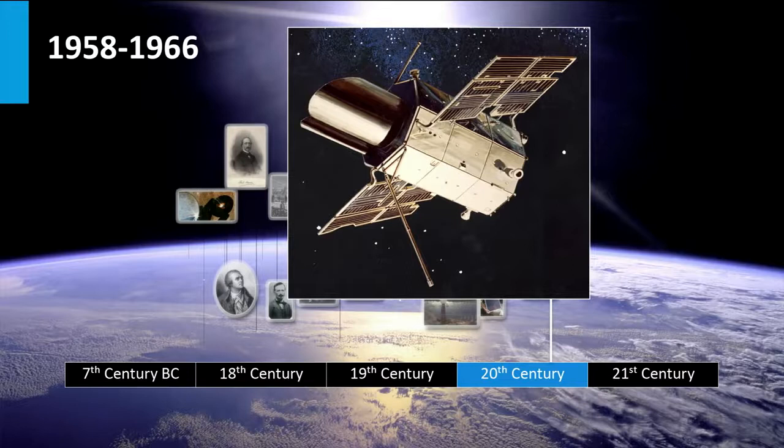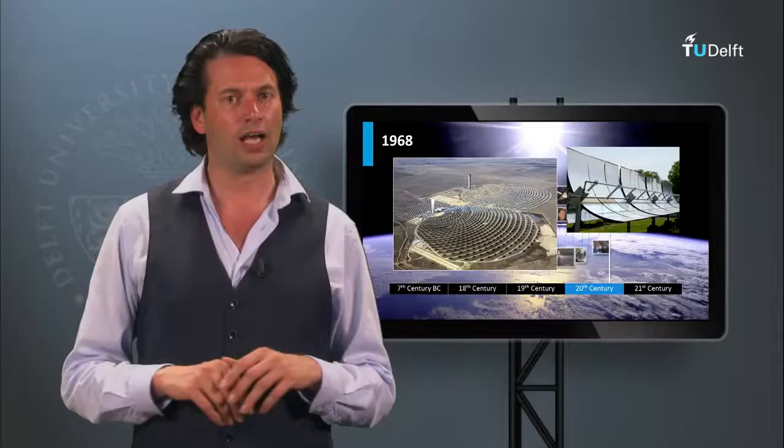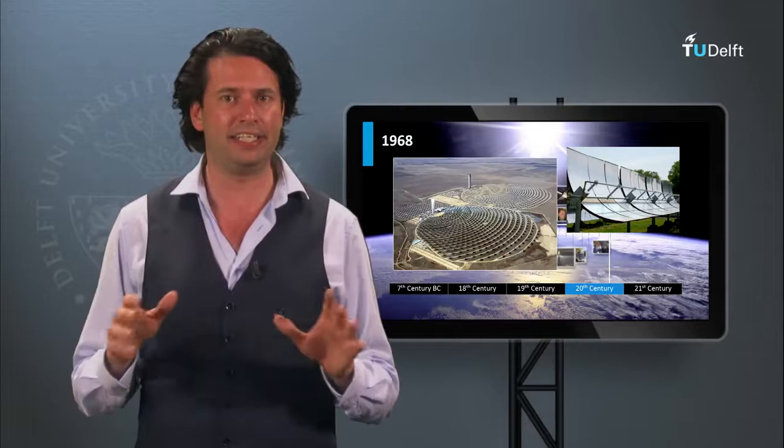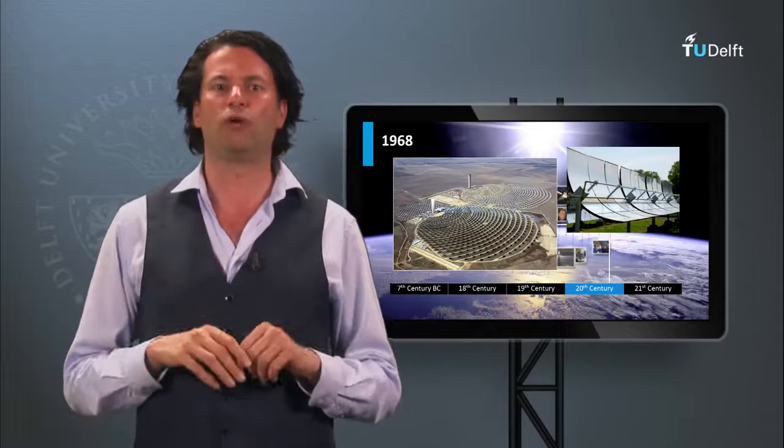In 1968 Professor Giovanni Francia built the first concentrated solar power plant near Genoa in Italy. The plant was able to produce 1 MW with superheated steam at 100 bars and 500 degrees Celsius. Note that the pictures shown do not reflect the actual plant in Italy.